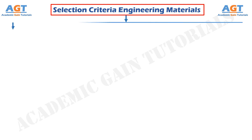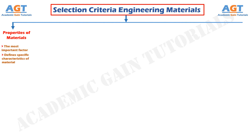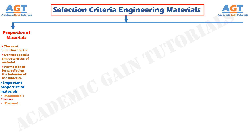Number 1: The properties of materials — it is the most important factor. The properties of a material define specific characteristics and form a basis for predicting the behavior of the material under different conditions. The important properties include mechanical (which includes stresses), thermal (heat or cold), chemical (change in property with change of atmosphere, water, or chemicals), electrical (power and current), and radiation (light, ultraviolet, nuclear).